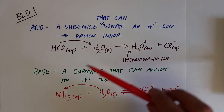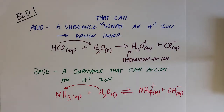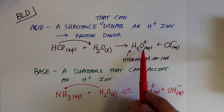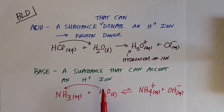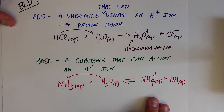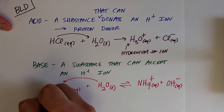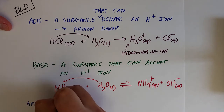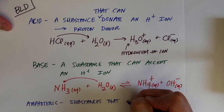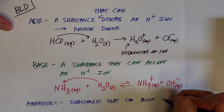In these two scenarios, water is involved in both processes, but it does something different in each. In the case of HCl, water is accepting a proton to form hydronium, which makes it a base. In the case of ammonia, water is donating a hydrogen ion, which makes it an acid. So water is a substance called amphoteric — a substance that can act like a base or an acid, and can donate or accept H-plus ions.